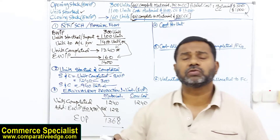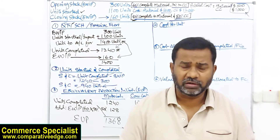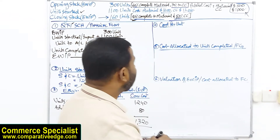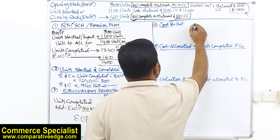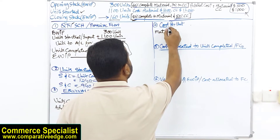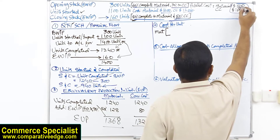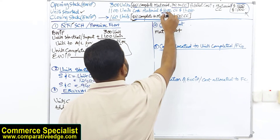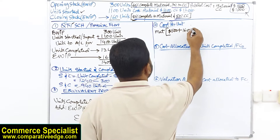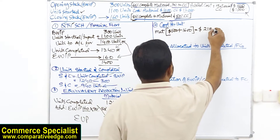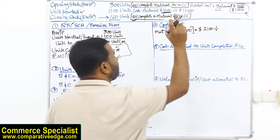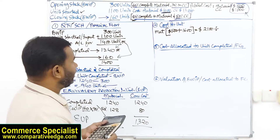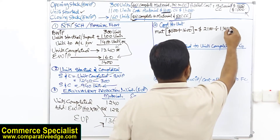Once EUP is calculated, the next step is cost per unit. Pay attention here — in the weighted average method this is done differently from FIFO. For material cost, we take the material cost in beginning WIP ($500) plus the material cost of current production ($1,600), giving a total of $2,100. This total material cost — including both opening WIP and current period — is then divided by the material equivalent units of 1,368.